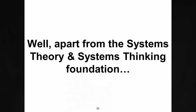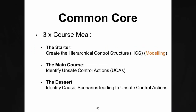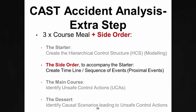Apart from their Systems Theory and Systems Thinking foundation, STAMP-based processes all share a common core — what I like to refer to as a three-course meal. The starter is the creation of the hierarchical control structure, some system modeling. The main course is analyzing that model and identifying unsafe control actions which need to be managed. And the dessert is identifying the causal scenarios that lead to those unsafe control actions. The CAST accident analysis method has an extra step — a side order to accompany the starter — which is the creation of a timeline or sequence of events, though this is not unique to STAMP-based assessments and would normally be done as part of any accident investigation process.